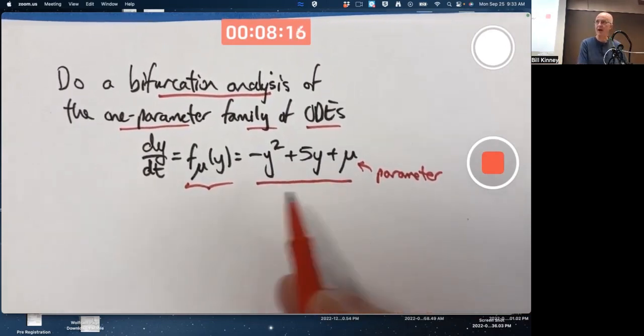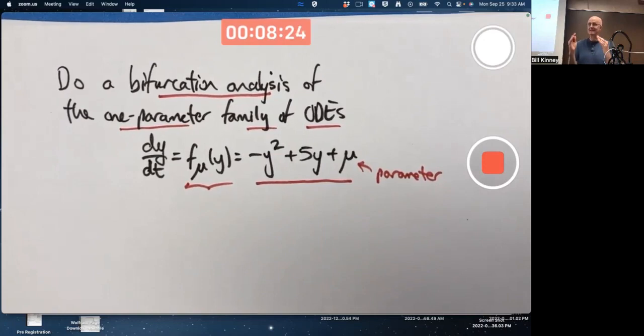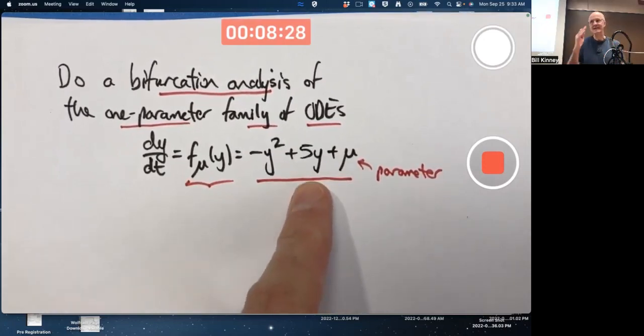It's a quadratic in y, so the graph of this function of y is a parabola. The coefficient of y squared is negative, so it's an upside-down parabola like this. 5y is the slope at y equals 0, but that's not a big deal. What does mu do? Mu is the y-intercept.